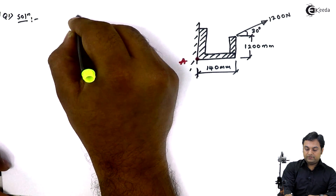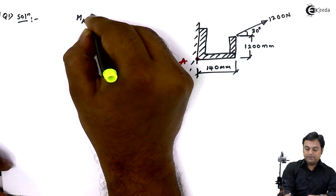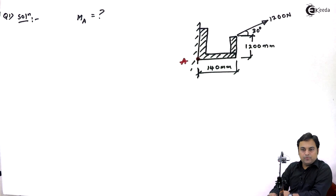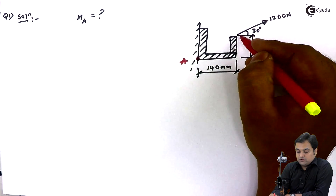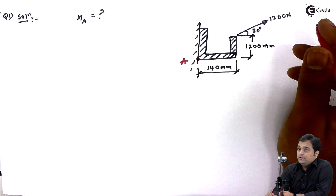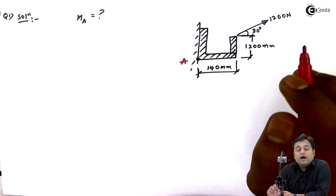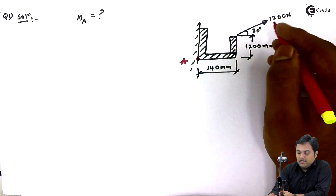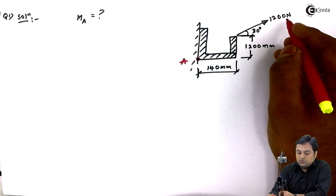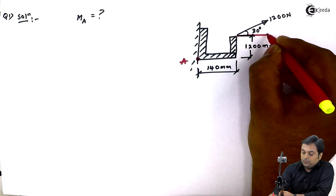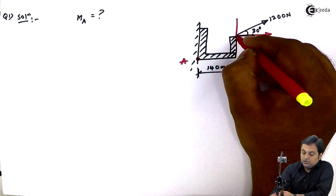The question requires calculation of the moment about point A. To calculate the moment, first note that the force provided is inclined, so you will have to resolve it. You cannot solve the problem until you have resolved the inclined force. The 1200 Newton force is inclined with the horizontal at 30 degrees, giving two components: one horizontal and one vertical.